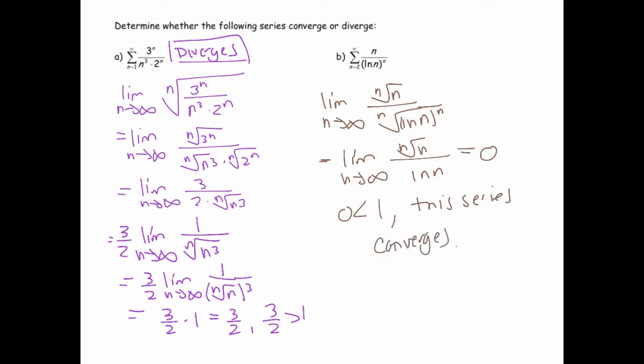So there's the nth root test. It's often used as a substitute for the ratio test, but it's kind of like a bonus test you can use. You can also use it to find the radius and interval of convergence, which we'll do in the next example.